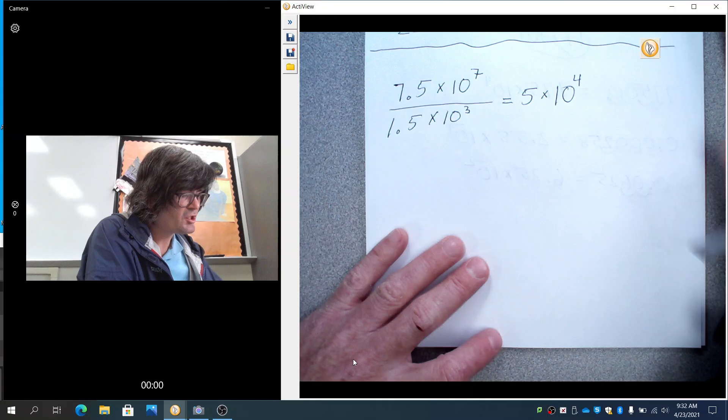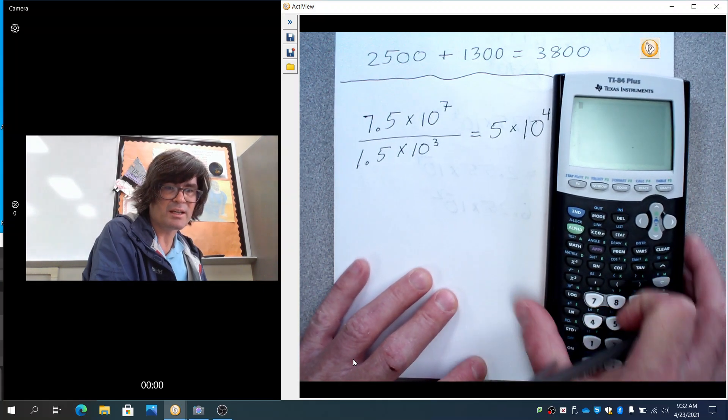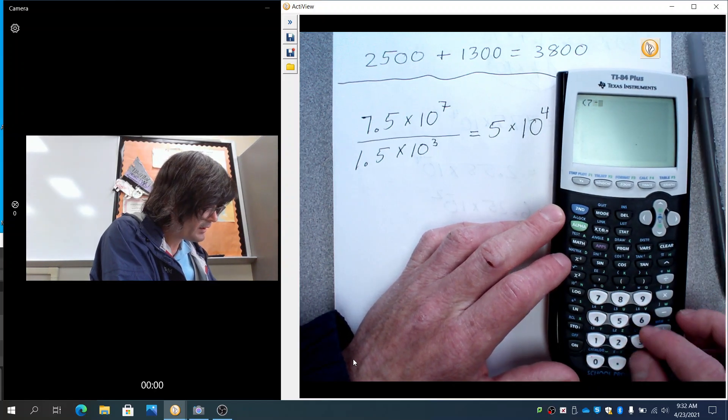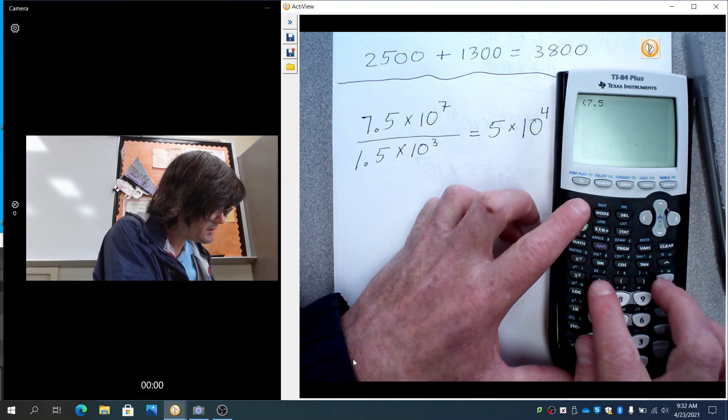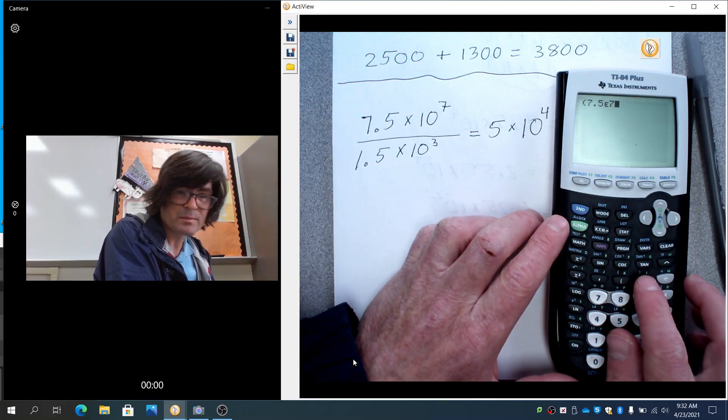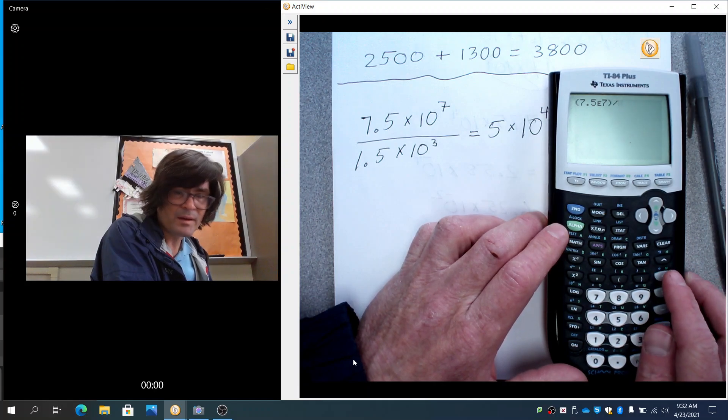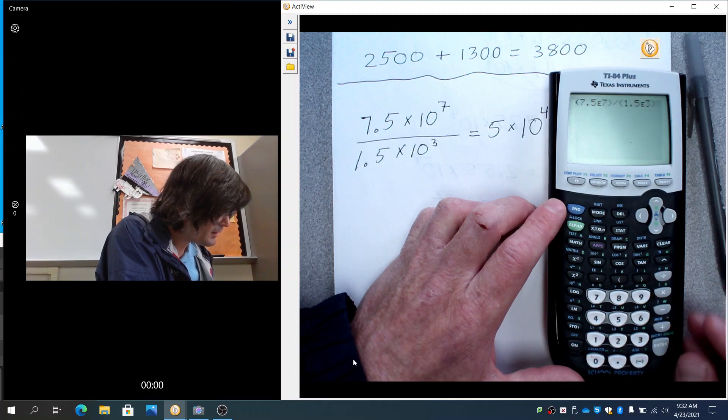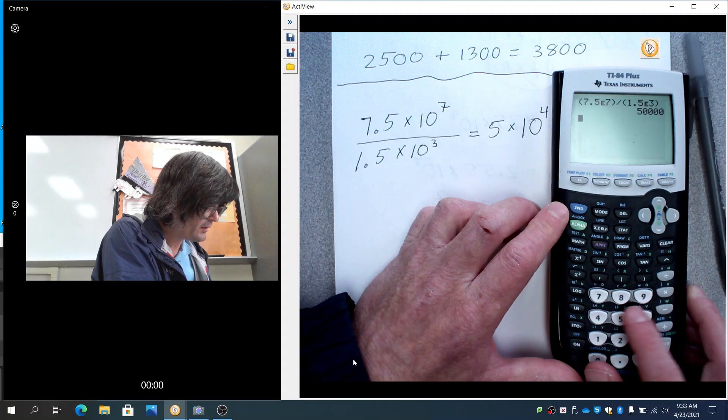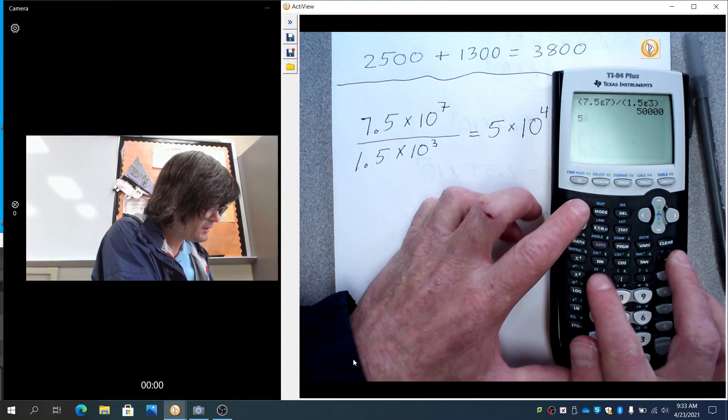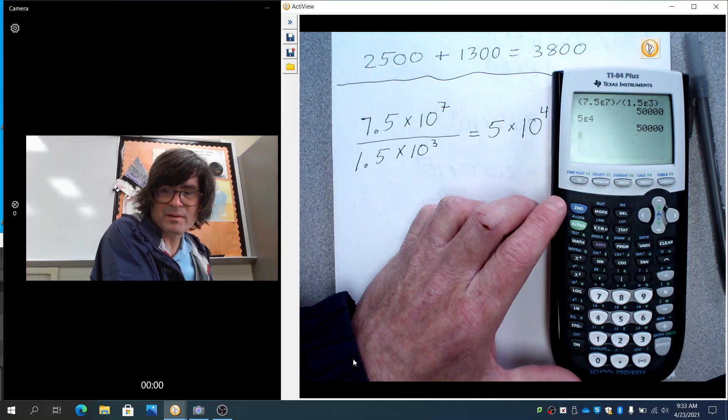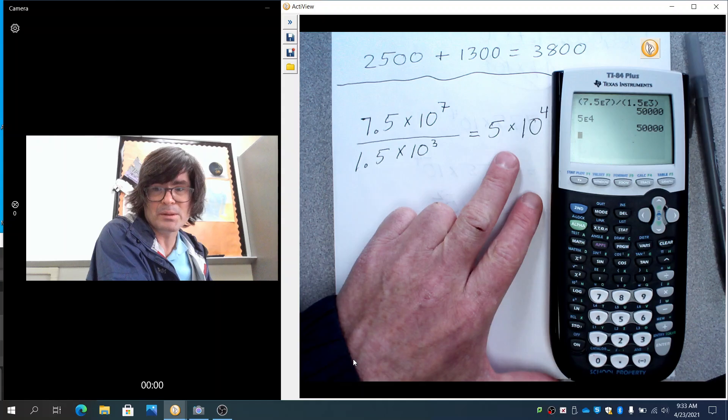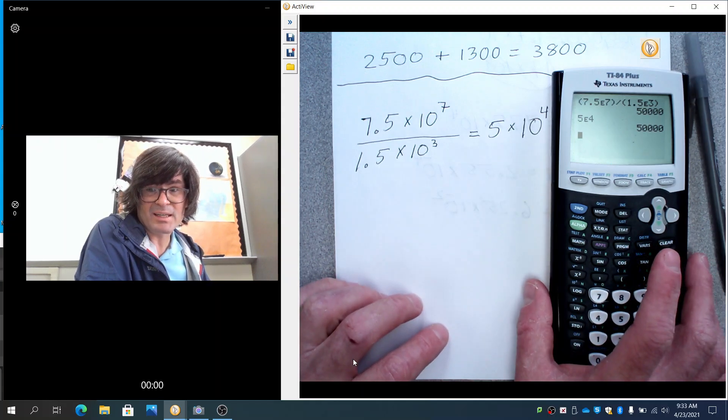That's it. So let's check it on the calculator. I'll show you how you can check this. I'm going to do parenthesis 7.5, 10 to the seventh. So that's my top number. Divide. And then 1.5, 10 to the third. And you can see we get 50,000. And if I were to just type in 5, 10 to the fourth, that's 50,000. The bad thing about the calculator is it doesn't put it into scientific notation for you. You can only do that here. So if you need an answer in scientific notation, then you're probably going to have to kind of do it yourself.